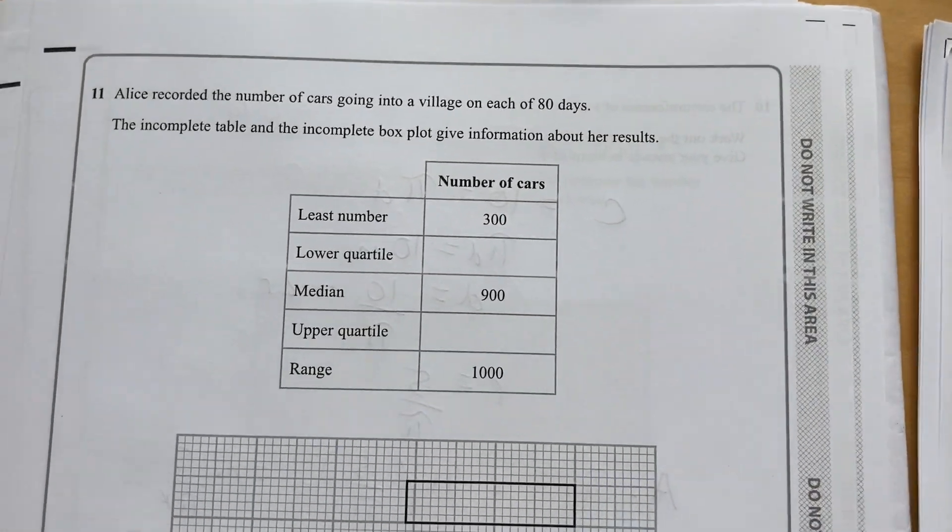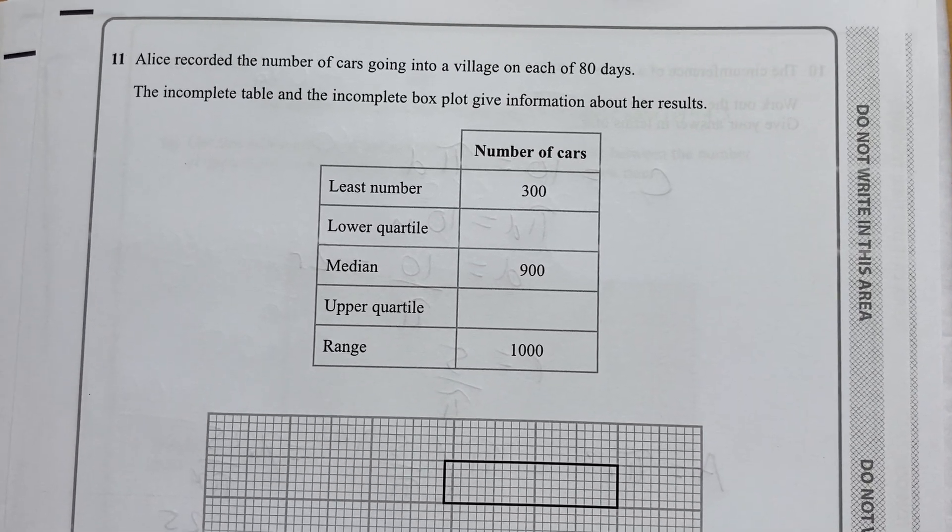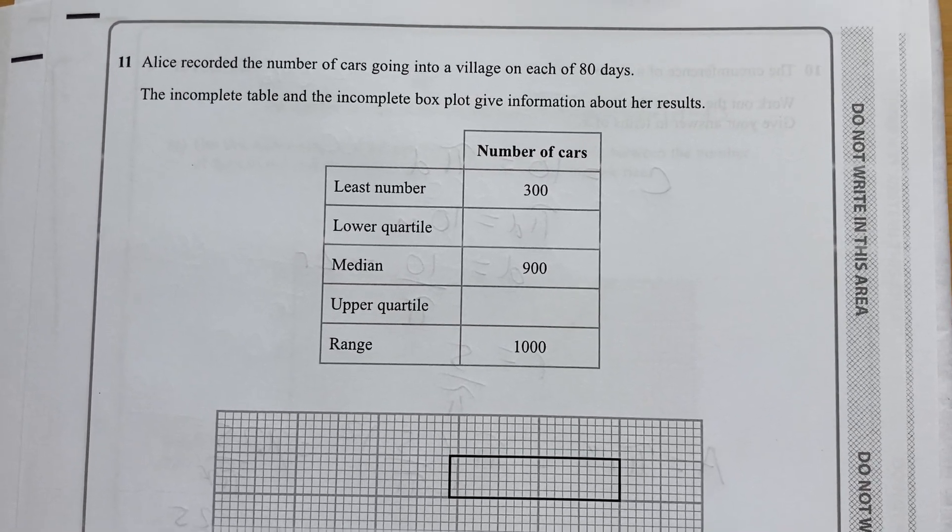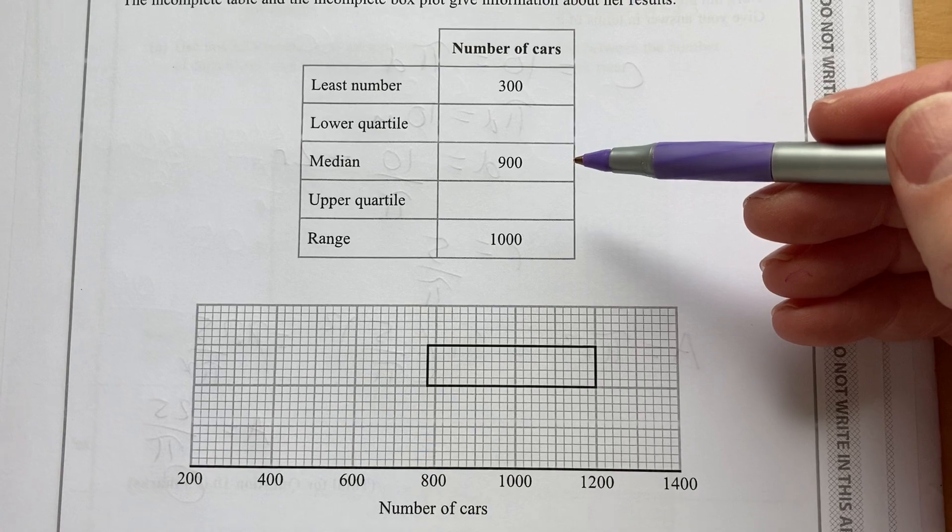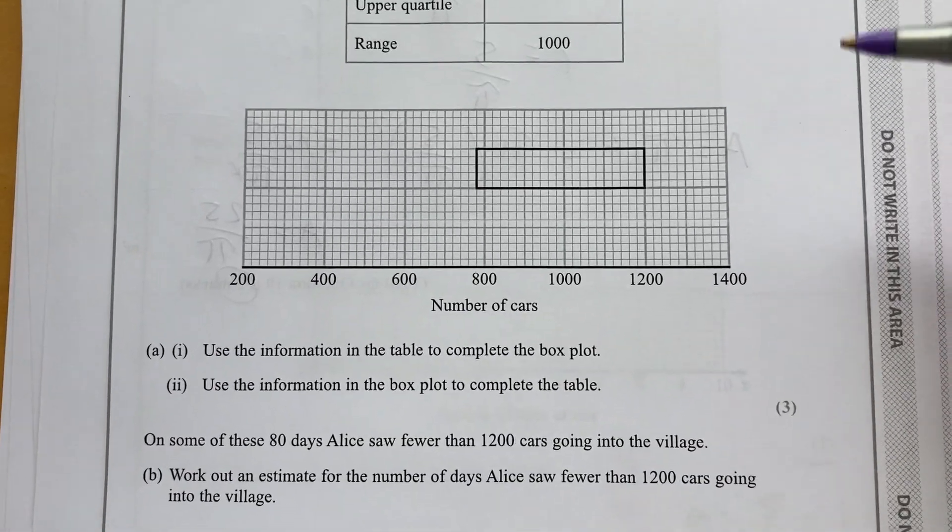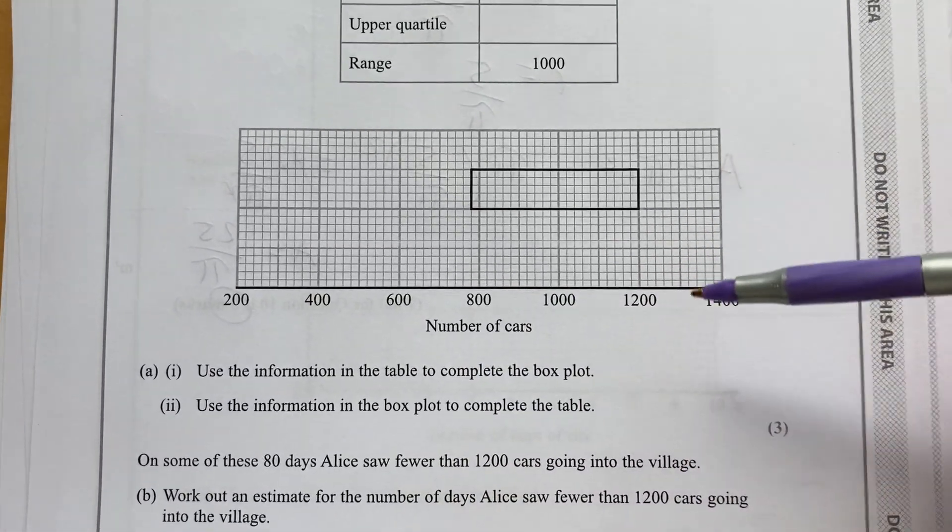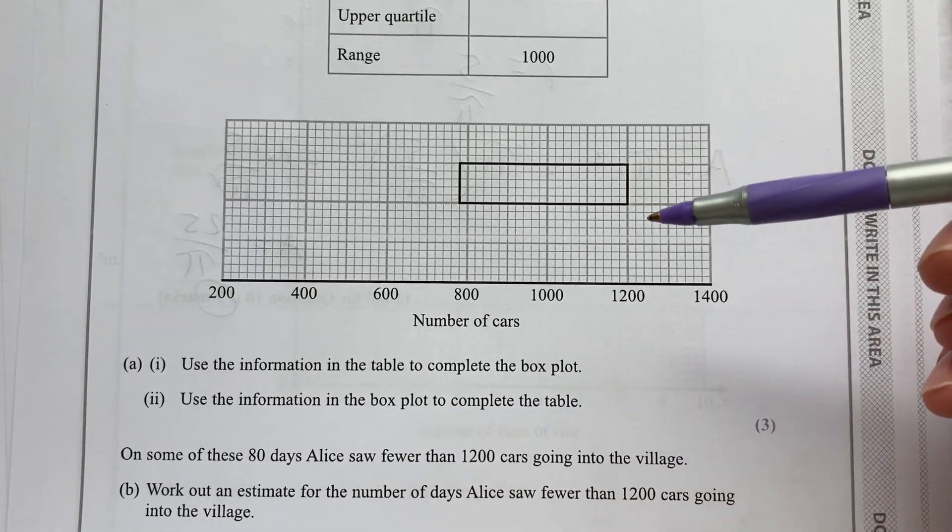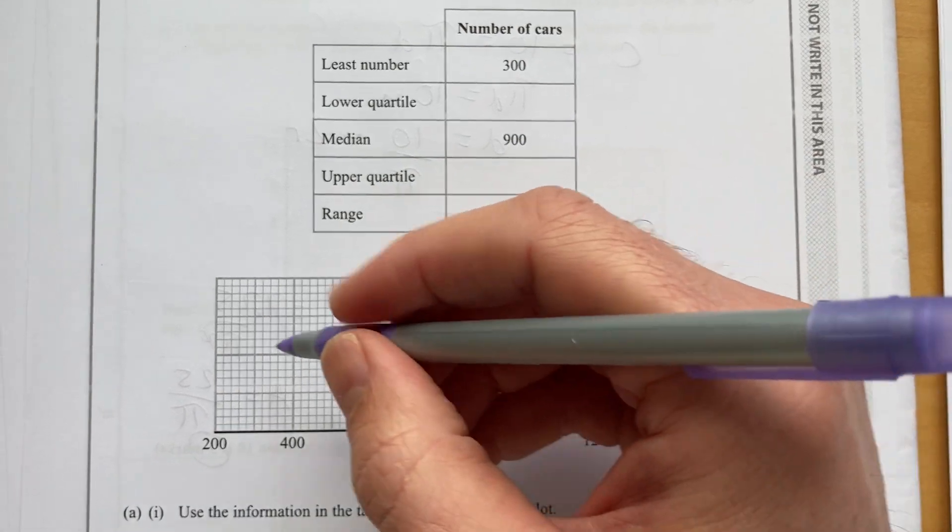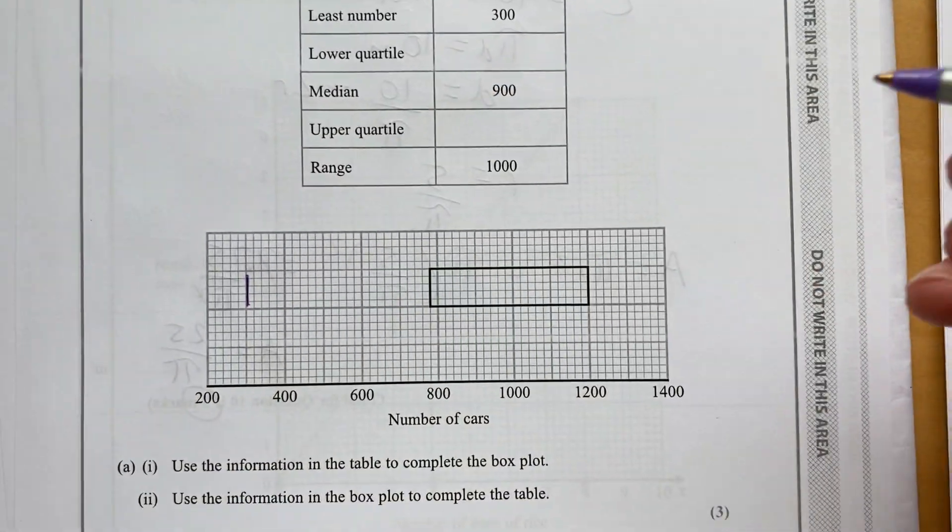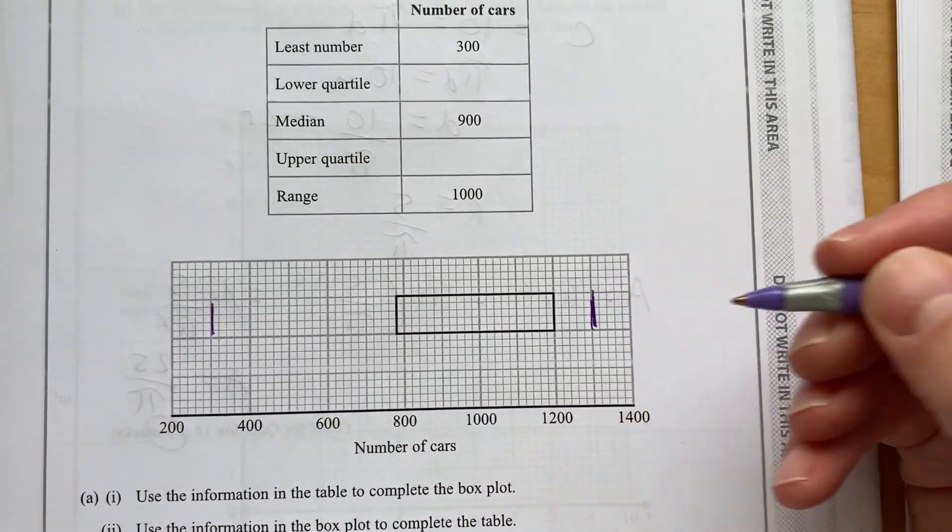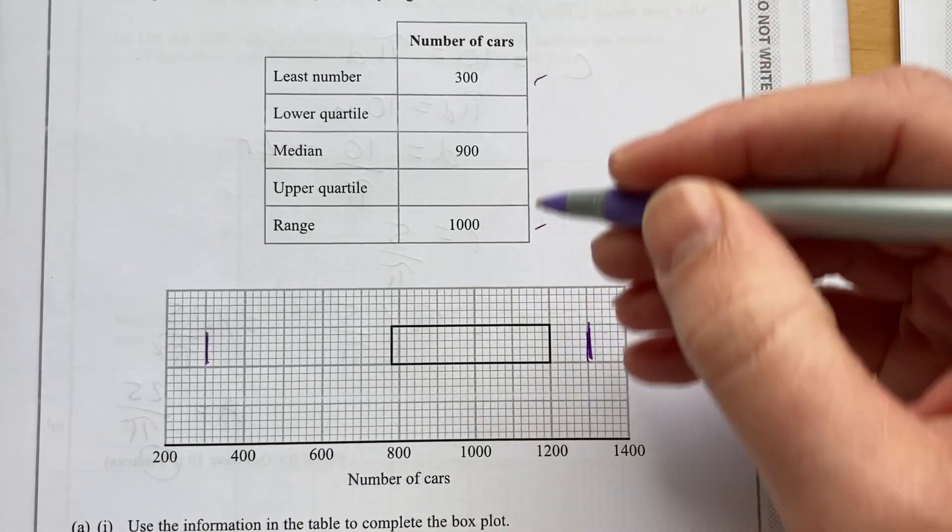Let's move on to question 11. Alice recorded the number of cars going to a village on each of 80 days. Incomplete table and incomplete box plot give information about her results. Got the least number, 300. Median, 900. Range, 1,000. And then the actual box is here with the lower and upper quartile. So, we have to use information in the table to complete the box plot and vice versa. So, the least number is 300. So, let's find 300 and draw that whisker there. The range is 1,000. So, we'll go to 1,300 there.